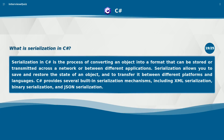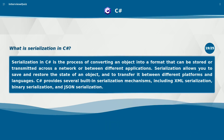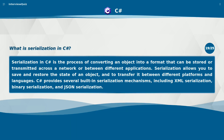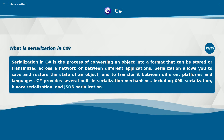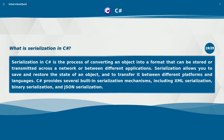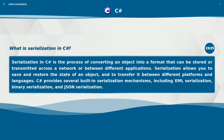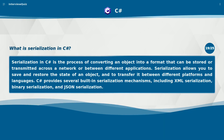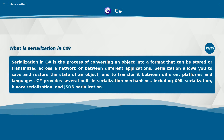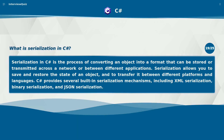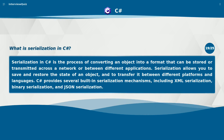What is serialization in C#? Serialization in C# is the process of converting an object into a format that can be stored or transmitted across a network or between different applications. Serialization allows you to save and restore the state of an object and to transfer it between different platforms and languages. C# provides several built-in serialization mechanisms, including XML serialization, binary serialization, and JSON serialization.